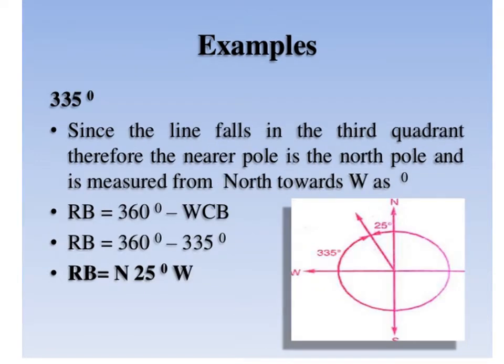For WCB of 335 degrees: since that line lies in the fourth quadrant, it is nearer to north pole and measured from north towards west. Therefore, reduced bearing equals 360 minus WCB: 360 minus 335 equals 25 degrees. The line lies in the north-west quadrant, so the reduced bearing is N 25 degrees west.